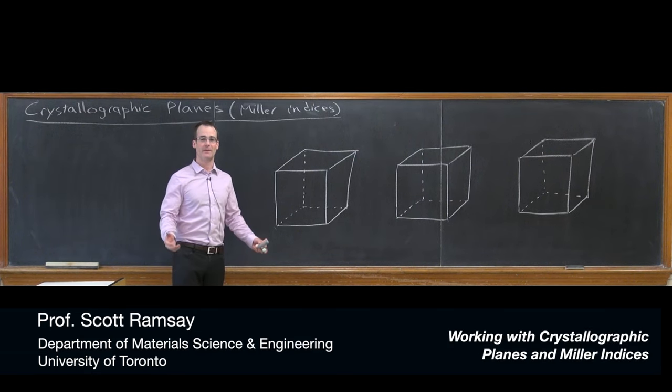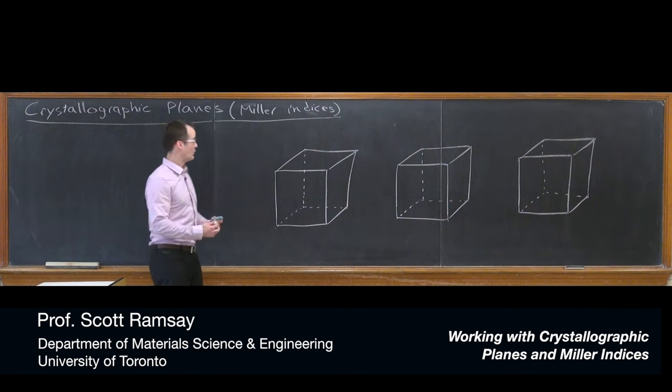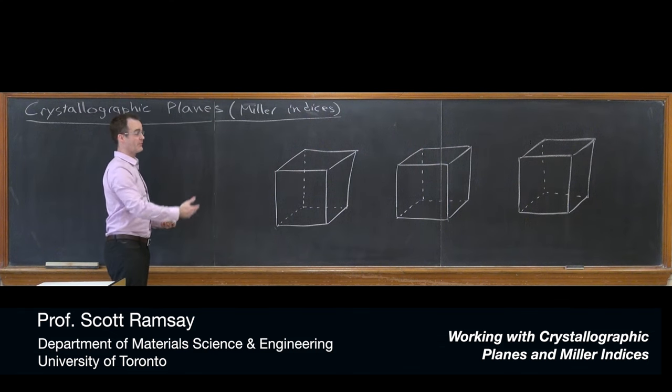Hi. Let's take a look at determining crystallographic planes. We're going to use a set of numbers similar to what's done in directions, except we call them Miller indices. They're determined differently because they're describing a plane.